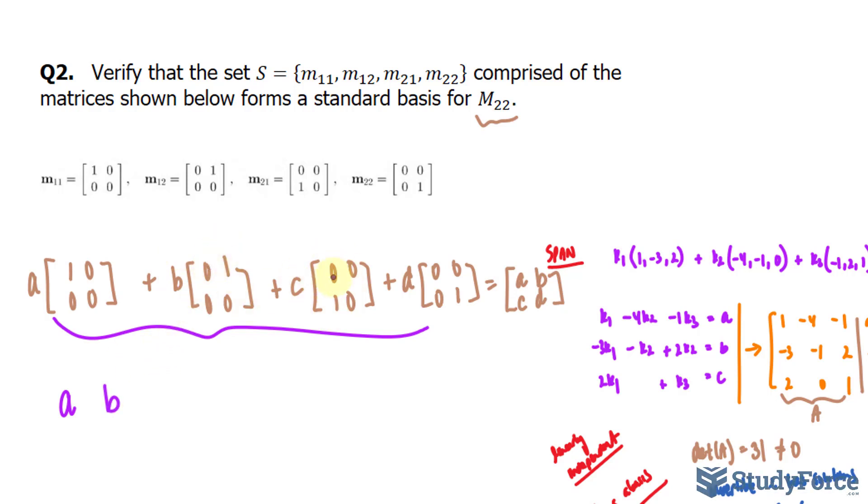Multiplying C to this matrix gives C in the second row, first column position, and D in that last position. The left side is equal to the right side, so this proves that these matrices span.